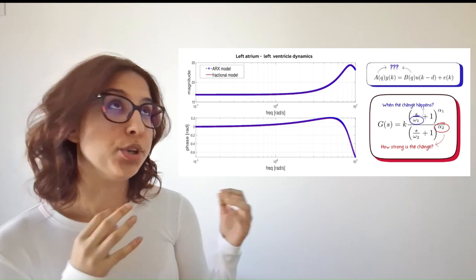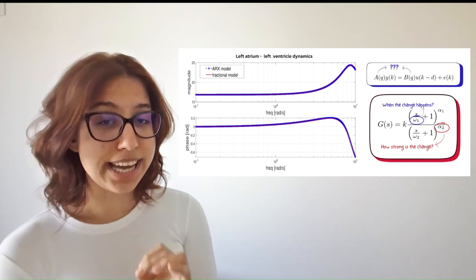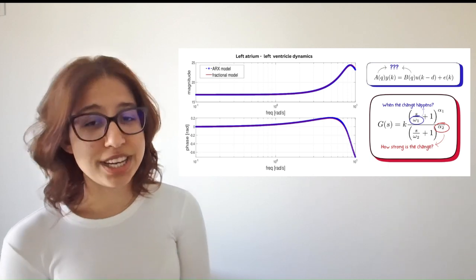Setting it to 1.2 or 2.3—this means the model can capture the heart's real behavior much more smoothly and precisely, offering a closer match.